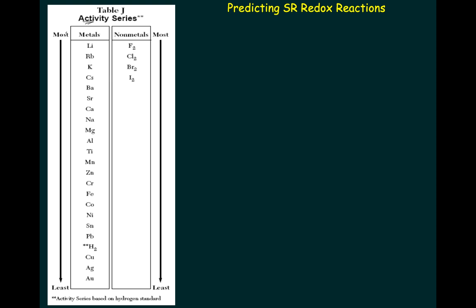As you go down the activity series, the ability to be oxidized decreases. At the bottom, elements are least likely to be oxidized and most likely to be reduced — most likely to gain electrons when in the ionic state. For nonmetals, it's reversed. Metals are most likely to lose electrons; nonmetals are most likely to gain. So the top of the table is most likely oxidized, and the bottom is most likely reduced.